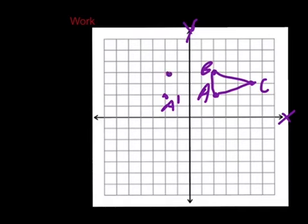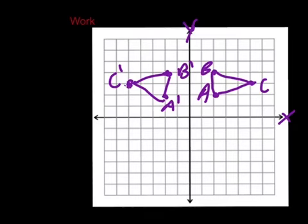You are going to mark that one in as well — it's going to be B1. Now we are going to count for C. C is approximately 1, 2, 3, 4, 5 spaces from the y-axis to the right, so we are going to go to the left: 1, 2, 3, 4, 5. We are going to mark that one in, and then draw in the shape. That completes the reflecting portion, which is the second part of this problem.